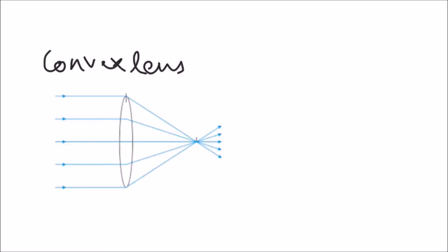For a convex lens, parallel rays will converge at a point called focal point.